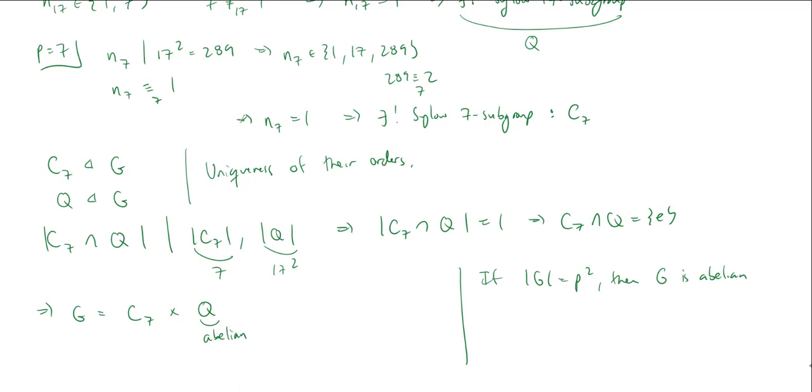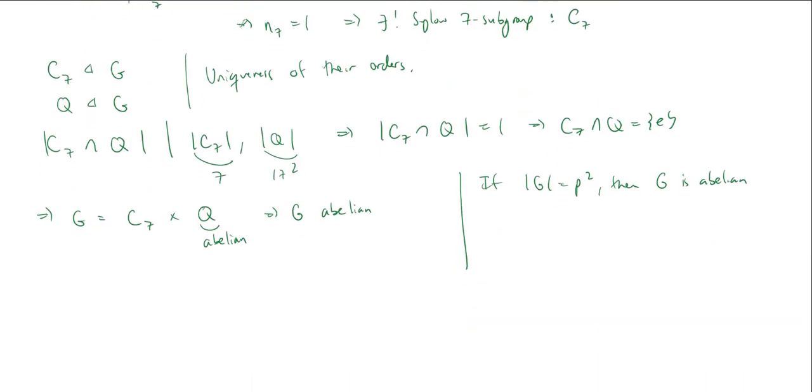So I now have a direct product of a cyclic group and an abelian group. Everything's abelian. So in fact, this tells me that G is an abelian group. Oh, that's pretty nice. Furthermore, since Q is specifically, right, just this group of order 289 or 17 squared, and it's an abelian group,